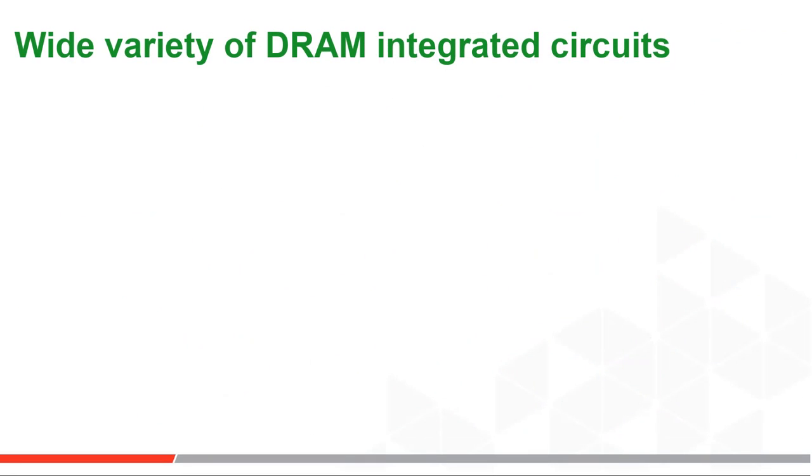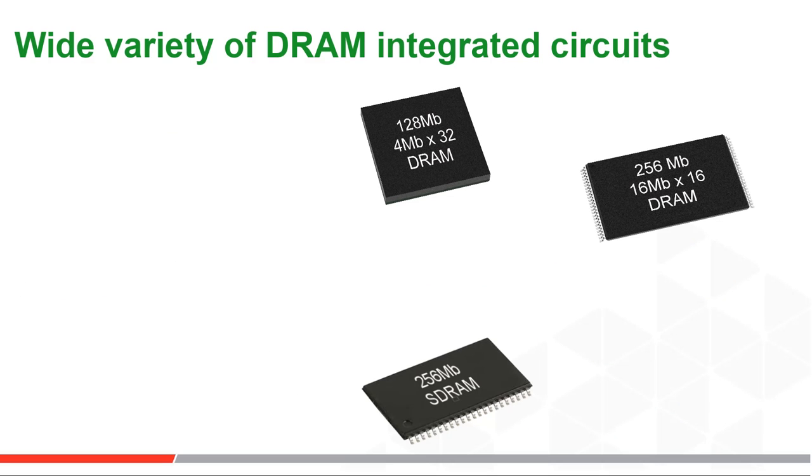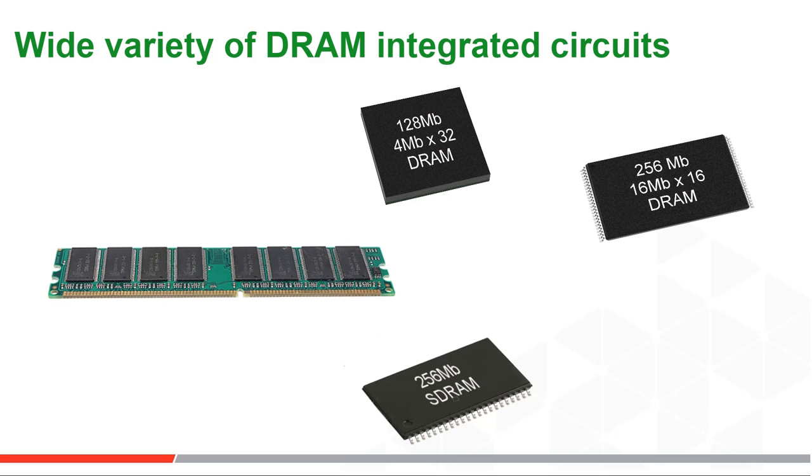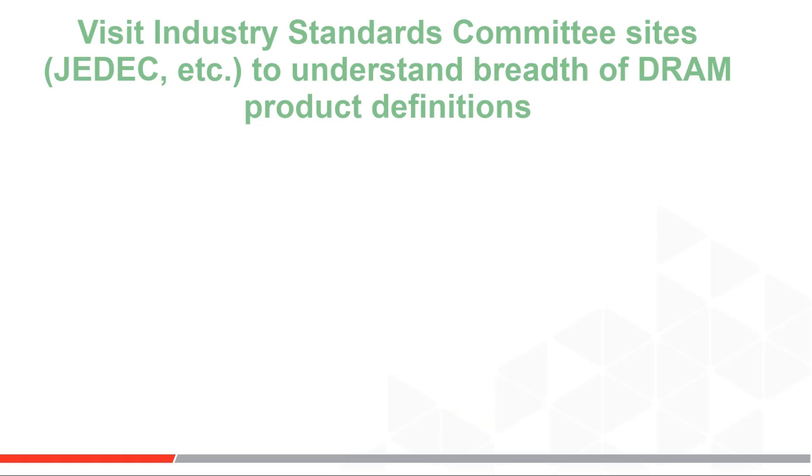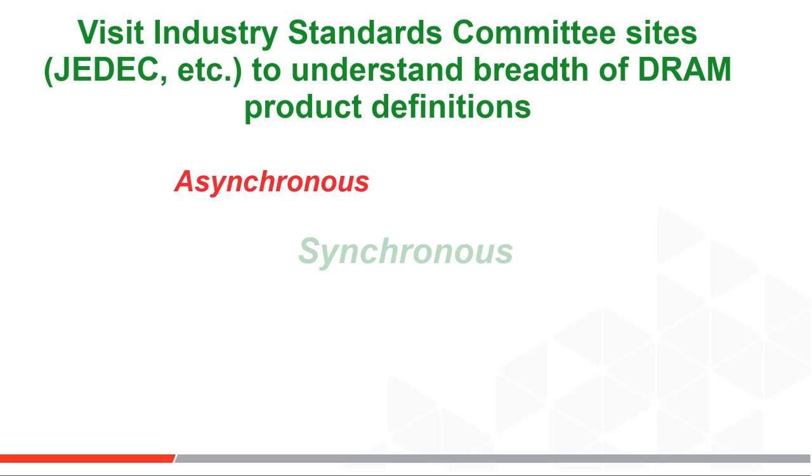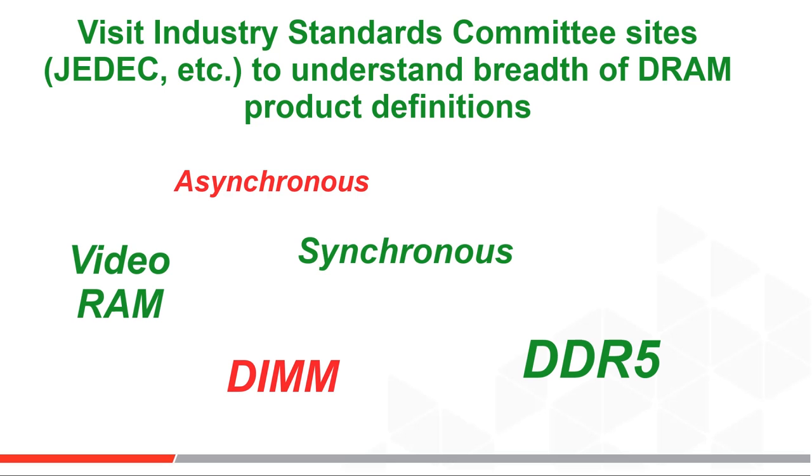Now there are microcontrollers that include DRAM blocks inside, but the standalone parallel integrated circuit DRAM market is huge. Because of its wide use, industry standard committees define DRAM interface speeds, clock rates, and bus widths in most cases. There are just too many variations to cover here in this video. Asynchronous, synchronous, DDR which is double data rate, DIMMs, video RAMs. It's a very long list.